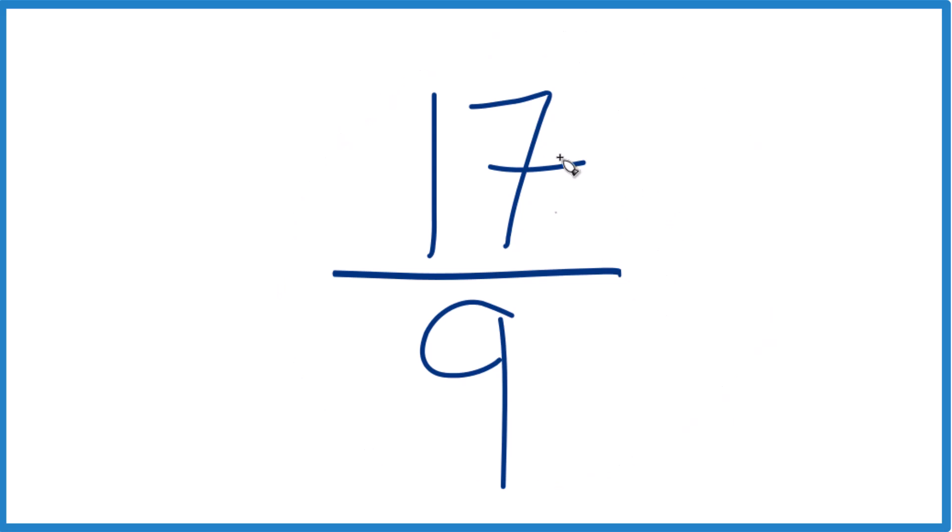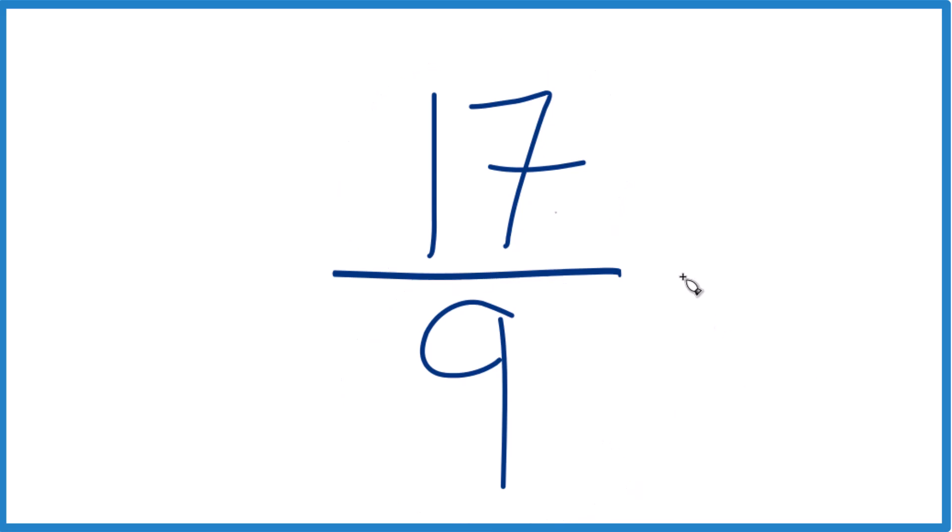We can, however, change it into a mixed number. Right now, we call it an improper fraction. 17, the numerator, is larger than the denominator, 9. So let's change it to a mixed number.